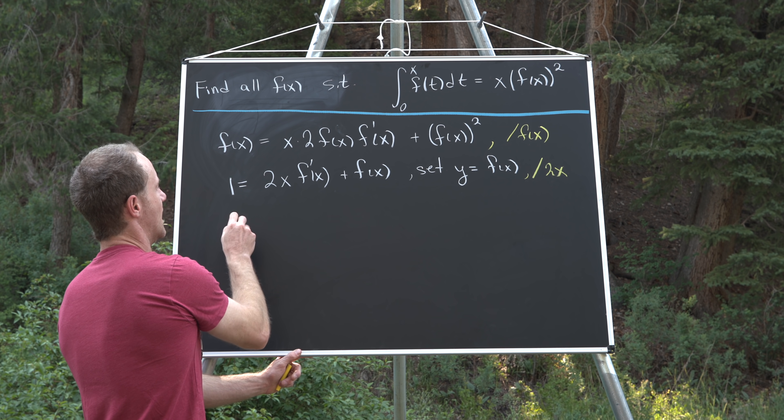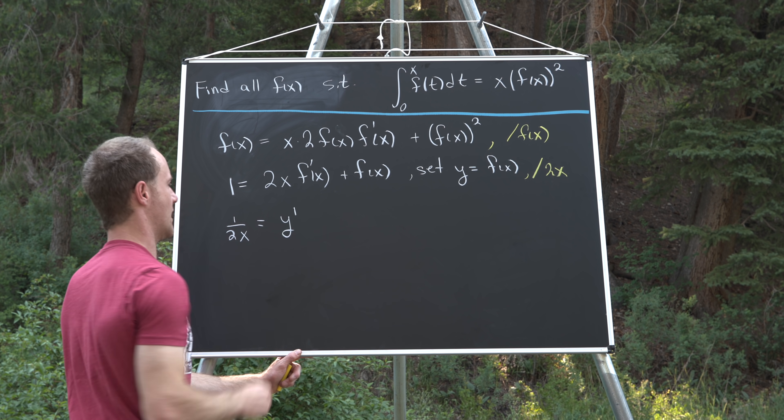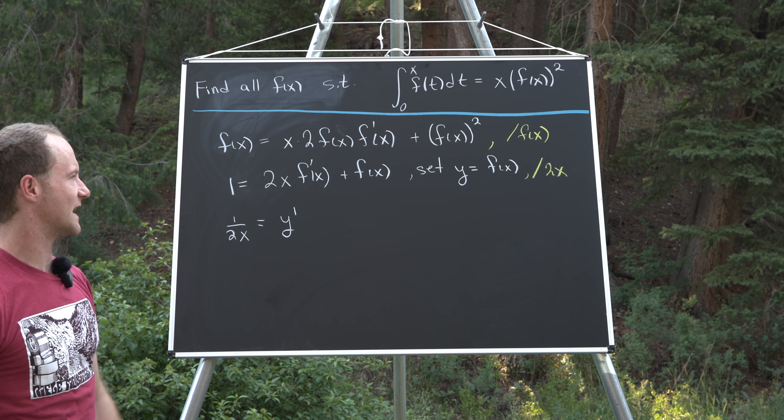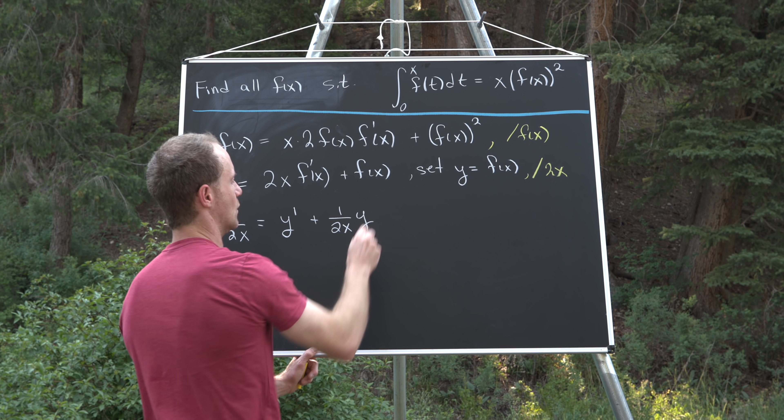So here we'll have 1 over 2x equals y prime, because remember we just divided by the 2x, plus 1 over 2x times y.